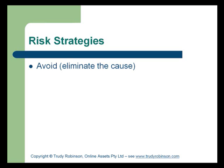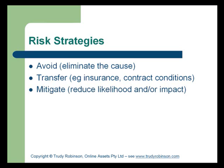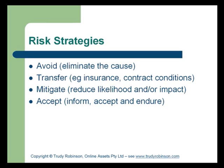The strategies for managing a risk may be to avoid it — undertaking tasks to eliminate the cause of the risk. You may transfer the risk; for example, in a construction project, you may have contractual conditions that manage the risk of bad weather, or take out insurance which transfers the risk and enables a claim if a particular circumstance occurs. You may also choose to mitigate a risk, which is reducing the likelihood and/or impact — if you cannot eliminate the cause, you try to reduce the impact by planning for it in advance. An organisation may also accept the risk; identification of the risk in advance means they can put actions in place to accept the risk and endure the outcome. These strategies are identified on pages 303 to 304 in PMBOK.